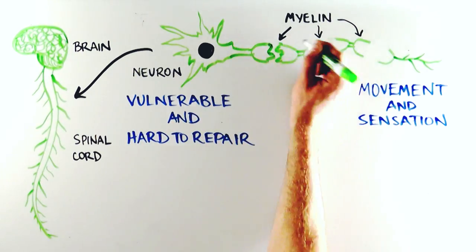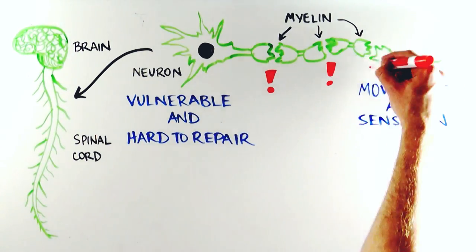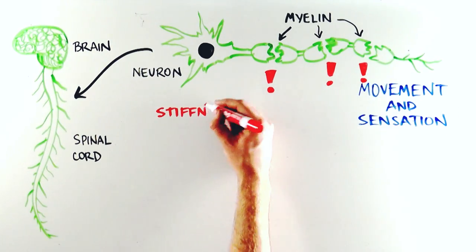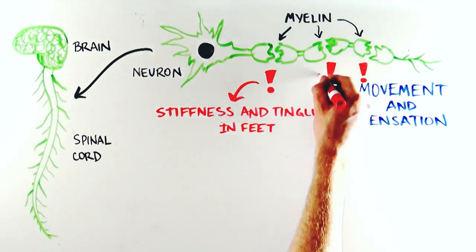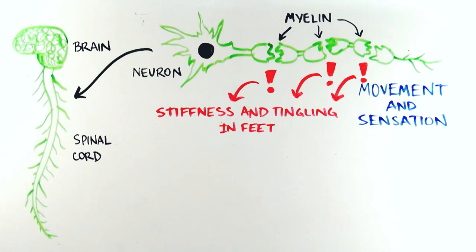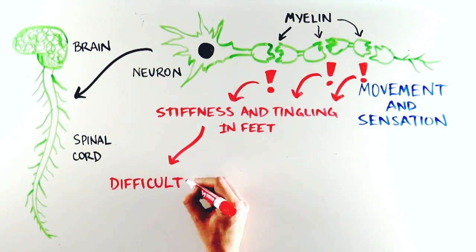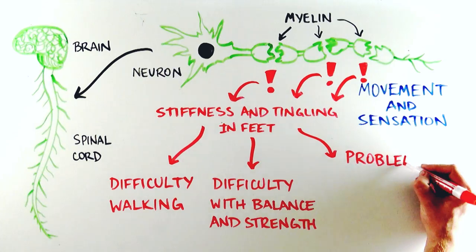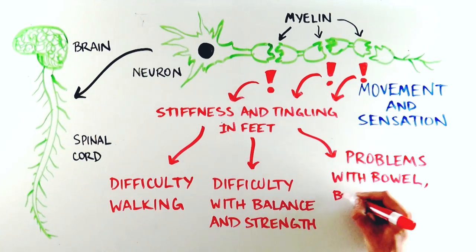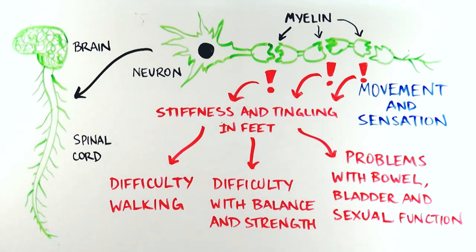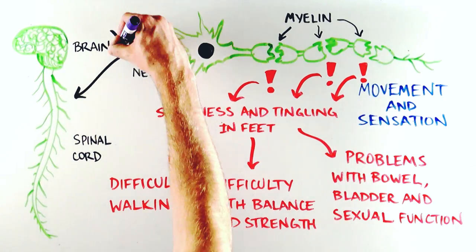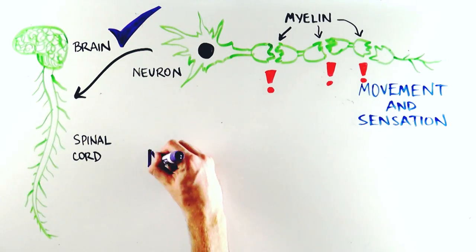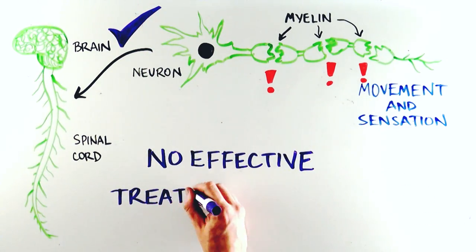When myelin is damaged in ALD, neurons in the spinal cord and nerves malfunction. As a result, symptoms often begin as stiffness or tingling in the feet, but they always worsen over time and result in difficulty with walking, balance, and strength, as well as bowel, bladder, and sexual functions. Fortunately, the AMN phenotype appears to spare brain function. Unfortunately, we don't yet have an effective treatment for AMN.